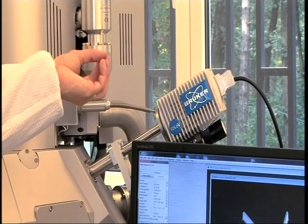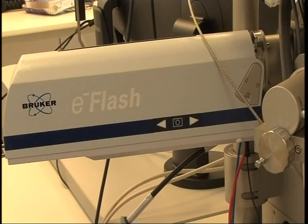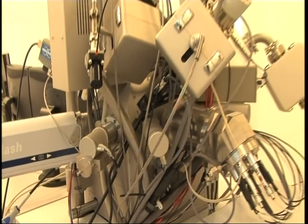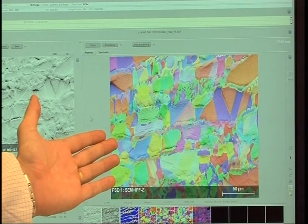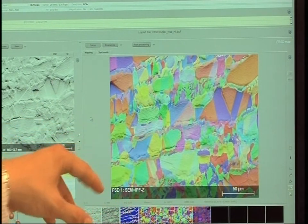Further, there is a device for electron-backed scattered diffraction. This allows us to identify the structure of our sample. For instance, on the sample of austenitic steel, we can see various grains. The same color refers to identical crystal structure of the grains.